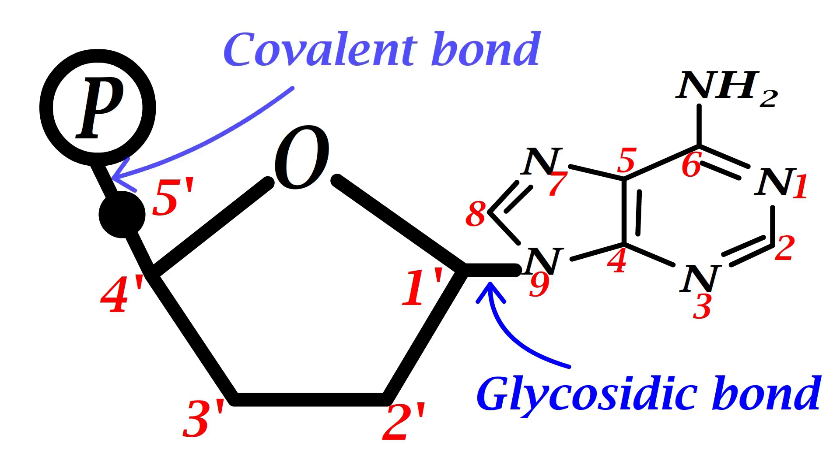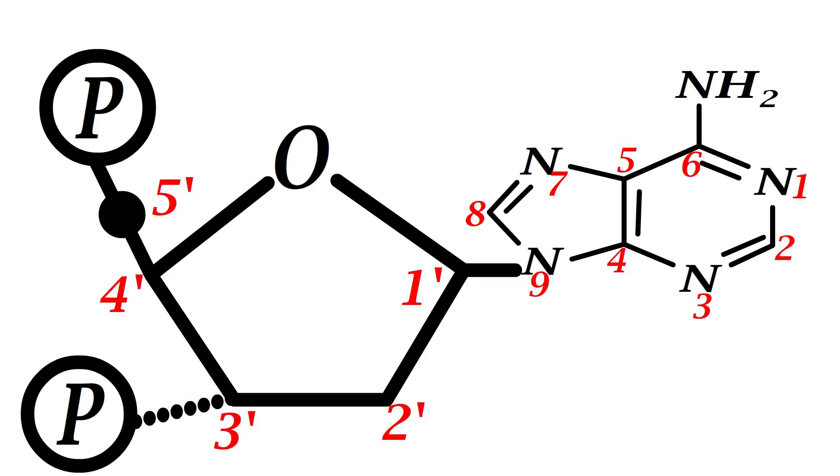The phosphate group is linked to the carbon 5 prime by covalent bond. In some cases, the phosphate can also be attached to the carbon 3 prime.